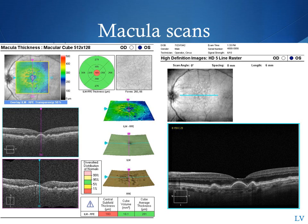I prefer to use the 512x128, because the 512 scans in the horizontal direction gives you higher definition. If there's a lesion that you're interested in, I'll use the 5-line high-definition scans, as you can see on the right-hand side. You can adjust the different angles for the scan and the spacing, and also the length of 3mm, 6mm, or 9mm. When the spacing is set to 0mm, it usually gives you the highest definition.